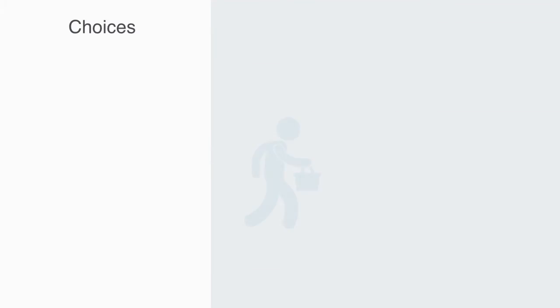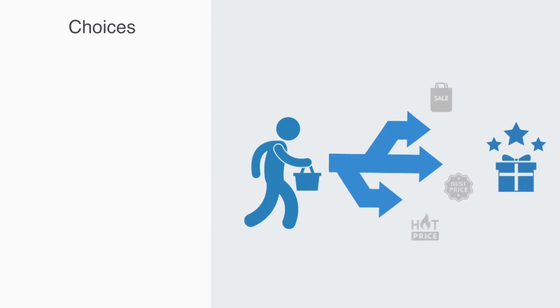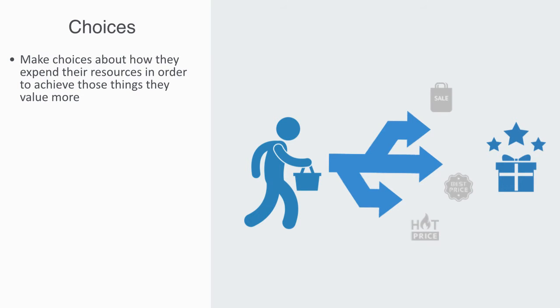As part of our definition for economics, we said it was about the efficient means to achieving valued ends, defining value in an abstract sense. In the process of doing this activity of economizing, agents will have to make choices about how they expend their resources in order to achieve those things that they place a higher value on.